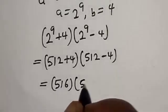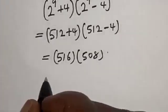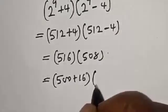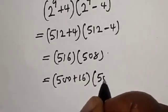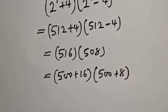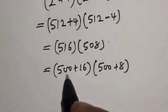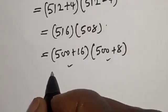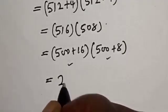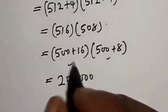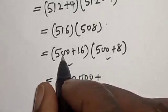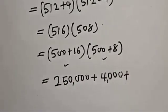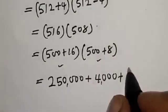That gives us 516 multiplied by 508. We can write 516 as 500 plus 16, and 508 as 500 plus 8. Multiplying: 500 times 500 is 250,000; plus 500 times 8 is 4,000; plus 16 times 500 is 8,000.